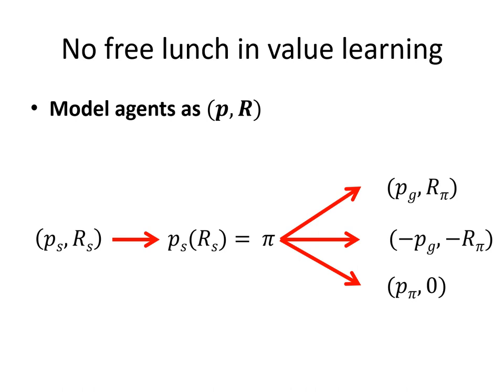Double negating this with the anti-greedy planner and the negative of that reward function also gives us a compatible pair. Finally, there is the indifference planner P_pi, which maps every reward function to that policy. Add to that the zero reward function and you have a compatible pair.